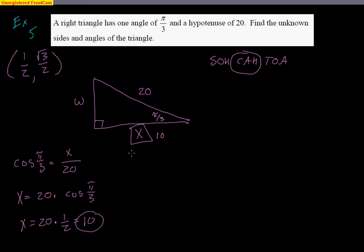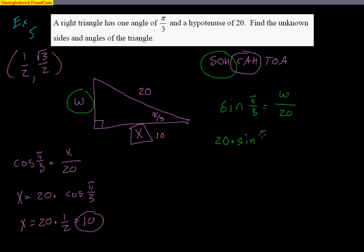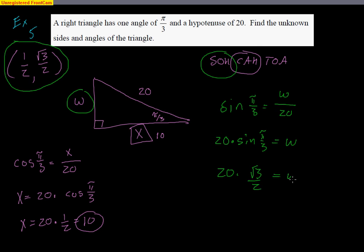Now let's find W, which is opposite the angle pi over 3, with hypotenuse 20. I'll use sine: sine of pi over 3 equals the opposite W over the hypotenuse 20. Multiplying both sides by 20 gives W = 20 times sine of pi over 3. From the unit circle, sine of pi over 3 is radical 3 over 2, so W = 20 times (radical 3 over 2). The 20 and 2 reduce to give W = 10 radical 3.